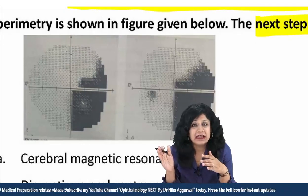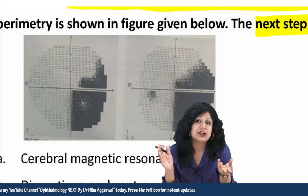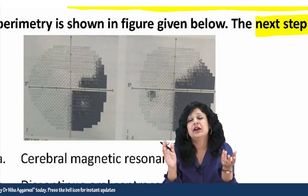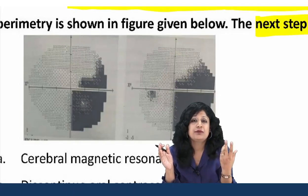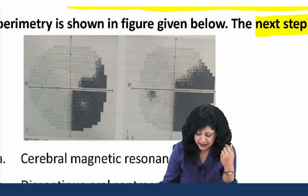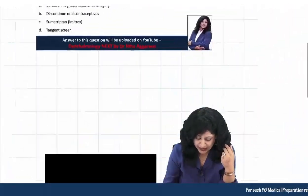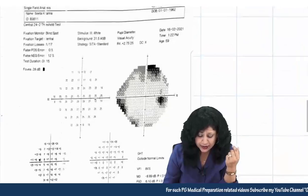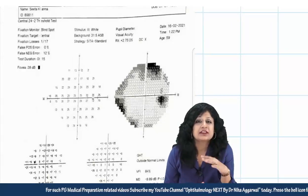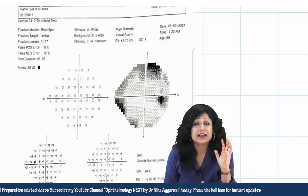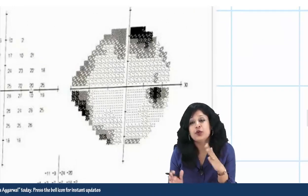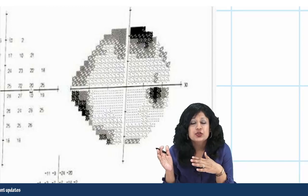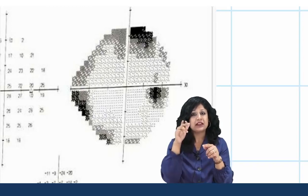What is the finding here? I had shared a video a few days back regarding how to read the printout of the Humphrey Field Analyzer. Let's have a quick review of that. This is your printout — this is not of the same patient, I am giving you an example of how to read it. You have to consider this printout as if it is your own visual field.